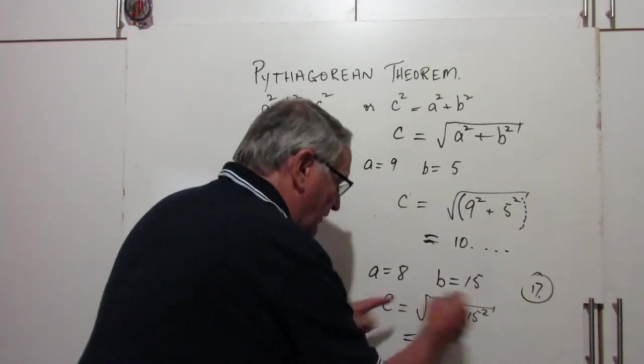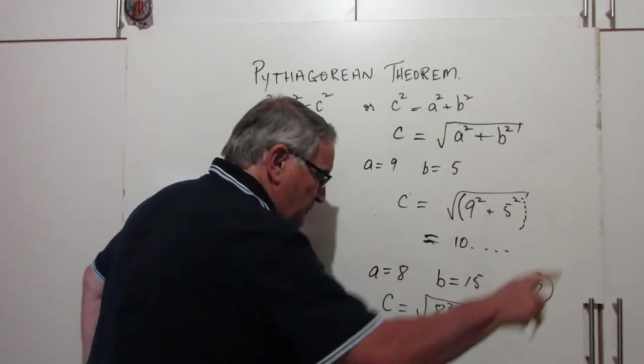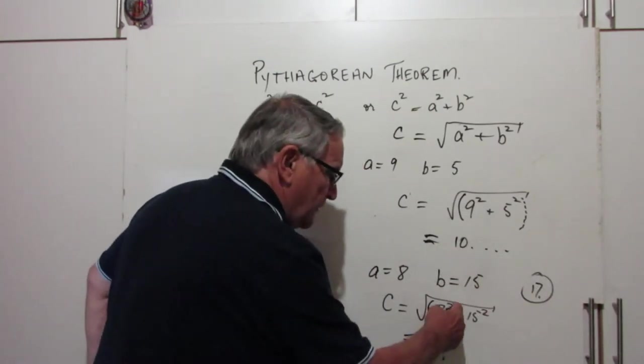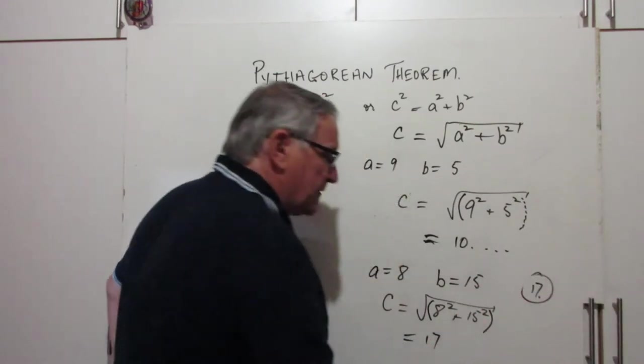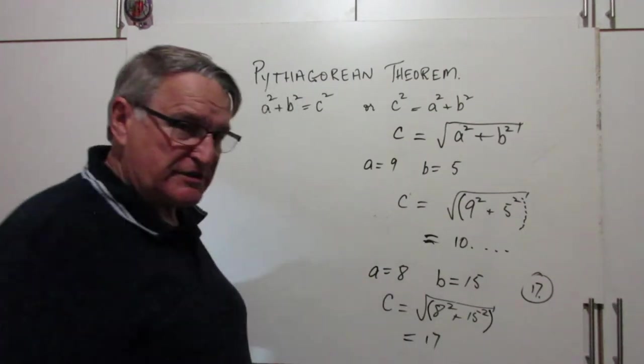If you put this in your calculator, hit the square root button, you'll see the bracket, 8² plus 15². Good habit to close the bracket, you don't have to. Hit equals, you're going to get 17.